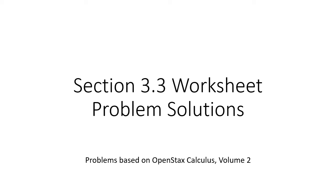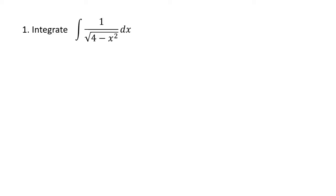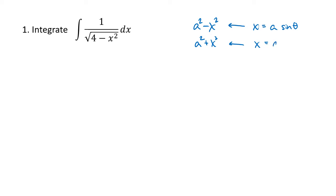In this video, we're going to work through several examples of problems involving trigonometric substitution. In all of these trigonometric substitutions, we're looking for one of two patterns. We're either looking for something that looks like a squared minus x squared, in which case we substitute x equals a sine theta, or we're looking for a squared plus x squared, in which case we substitute x equals a tan theta.